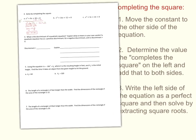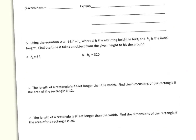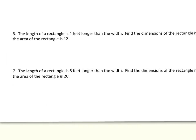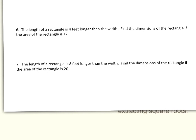I wanted to look at question 6, a word problem. It says: the length of a rectangle is 4 feet longer than the width — find the dimensions if the area is 12. I'll start by drawing a picture. If I call the width x, the length is x + 4. The area is length times width, so x(x + 4) = 12, giving x² + 4x = 12.